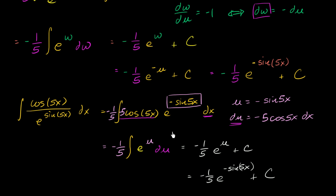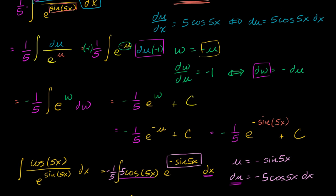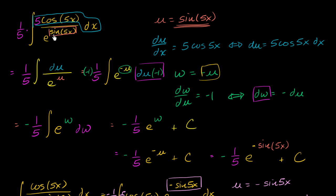So this one-substitution approach is faster and simpler. Over time, you might even start doing this in your head. The two-substitution approach wasn't wrong — we just had to do an extra substitution to work it through. And I was able to do this video despite the squawking crow outside.